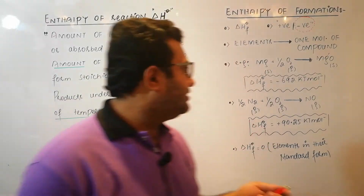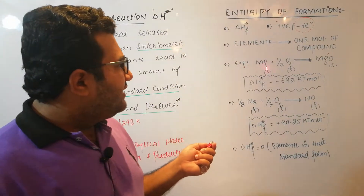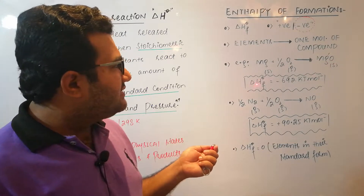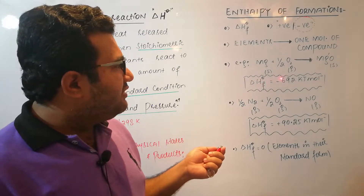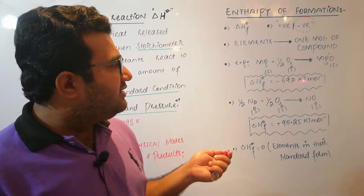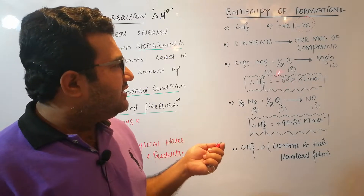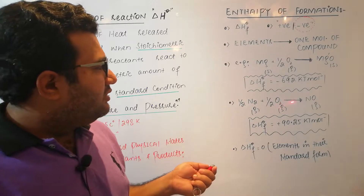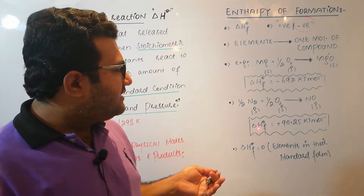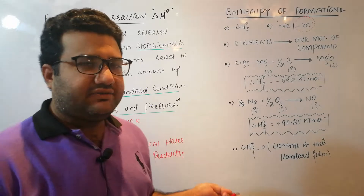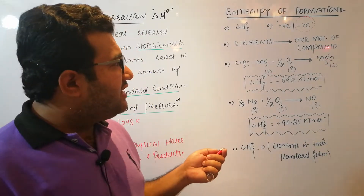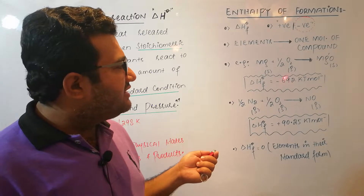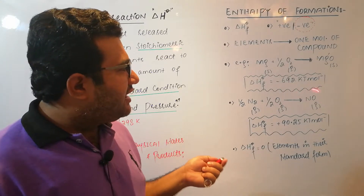For example, magnesium reacts with oxygen to form magnesium oxide. In this case the enthalpy of formation is −692 kJ/mol, meaning it is exothermic. When N₂ reacts with O₂ to form NO, the enthalpy of formation is positive. This simply means that magnesium oxide is a stable compound because its enthalpy of formation is negative, while NO (nitric oxide) is an unstable compound because its enthalpy of formation is positive.